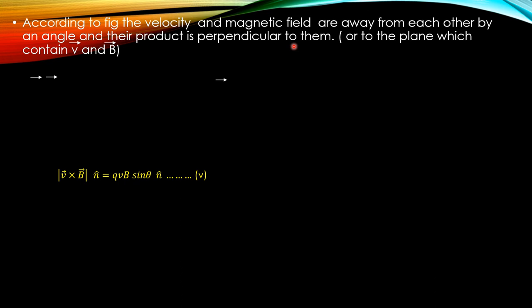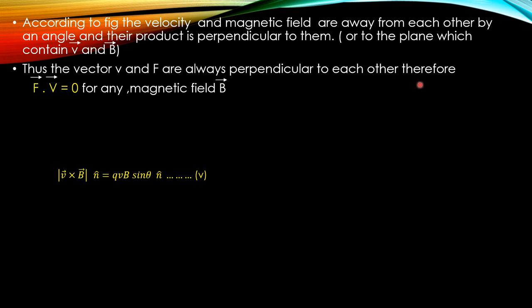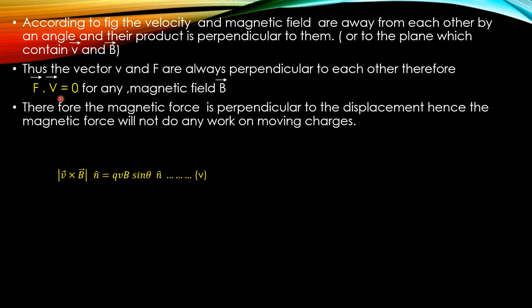The velocity and magnetic field are at a particular angle - apart from each other. The vectors V and F (force) are always perpendicular to each other. Velocity and force both come perpendicular to one another, and we take their dot product. The magnetic force is perpendicular to the displacement.